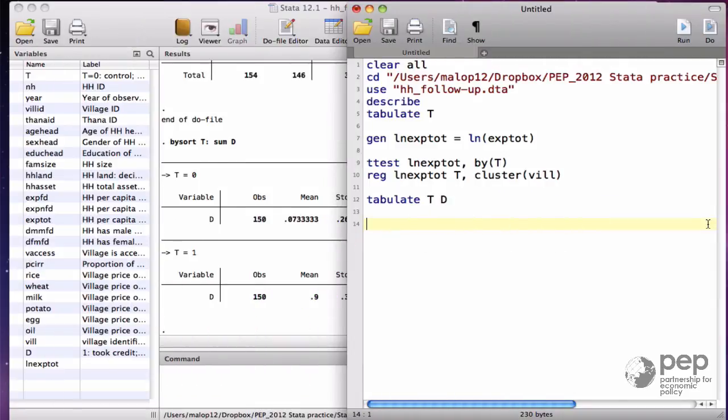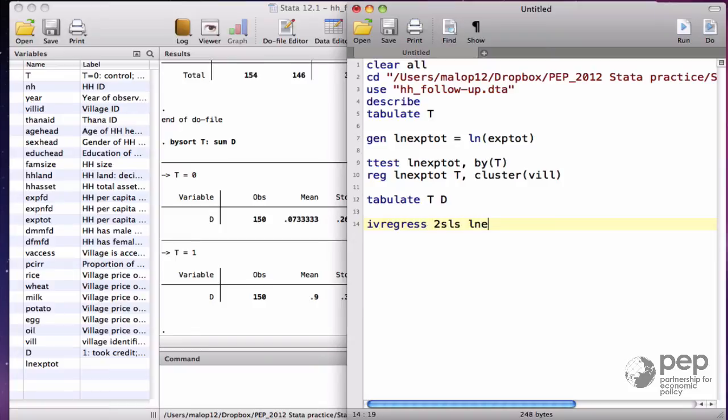In Stata, the command is ivRegress 2 Stage Least Squares. This is the instrumental variable regression. The dependent variable is lnxStart as before, and d is the treatment variable that we want to instrument using the random assignment t.